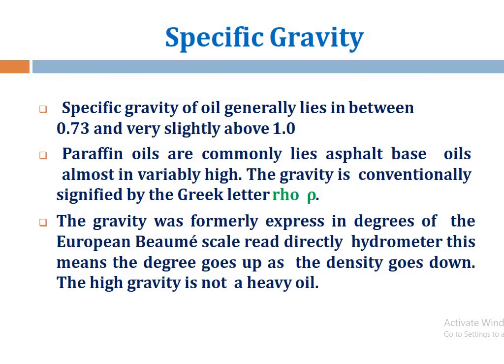First, specific gravity: the specific gravity of oil generally lies between 0.73 and slightly above 1.0. Paraffinic oils are commonly lighter, while asphalt-based oils are almost invariably heavier. Gravity is conventionally expressed in API degrees using a hydrometer — as the degree goes up, the density goes down, so a high API gravity means a lighter oil, not a heavier one. Gravity also changes with temperature.